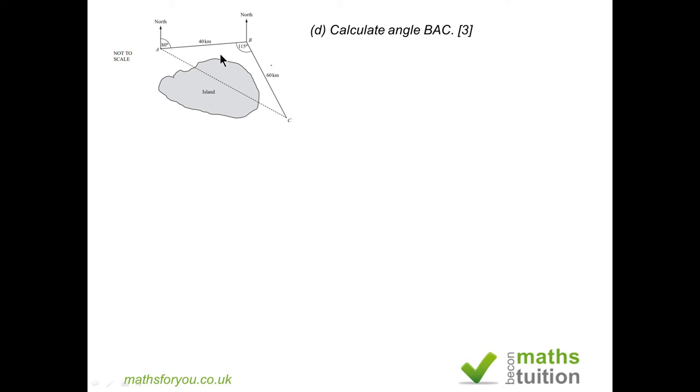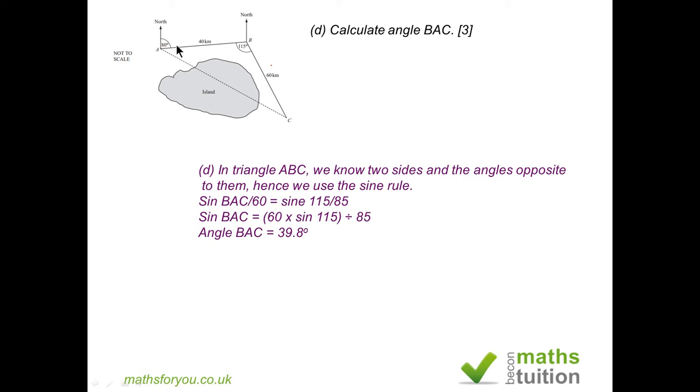This time around we are supposed to calculate angle BAC. Because we now know the size of A to C, we have three sides and one angle, so we want to find angle BAC. We can use the sine rule in this case. Sine BAC, which we are looking for, divided by 60, because 60 is opposite the angle BAC, equals sine 115, which we already know, divided by 85, which we just found as opposite angle B. So sine BAC will be 60 times sine 115 divided by 85, and angle BAC is 39.8 degrees.